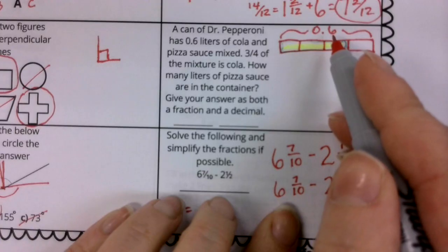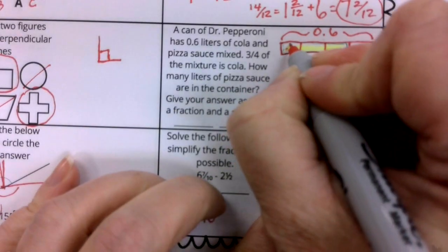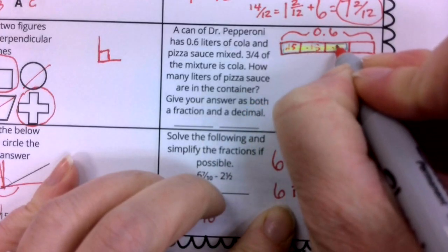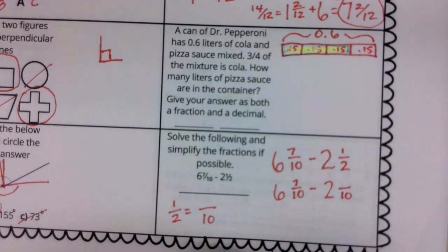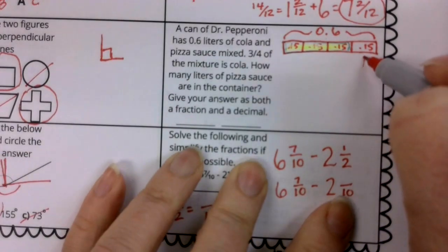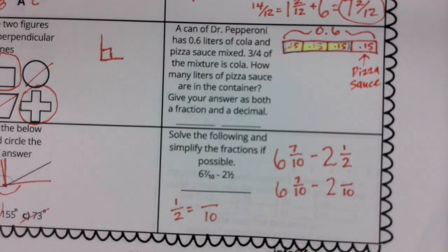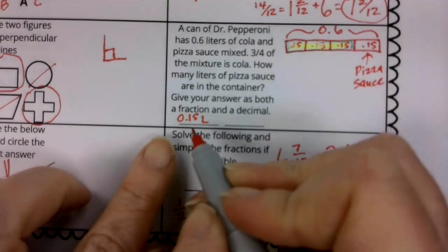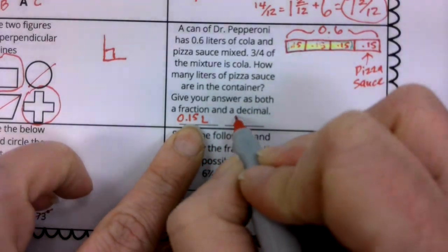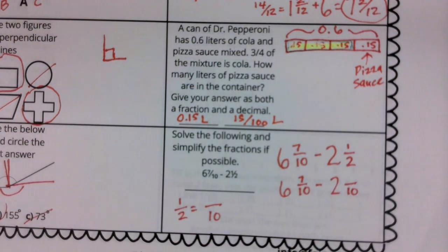So if I think about these 6 tenths as 60 hundredths, I know that if I take 60 and divide it into 4, I'm really going to have 1,500 here, 1,500 here, 1,500 here, and 1,500 here, because if I add 15 plus 15 plus 15 plus 15, I get to 60. 60 hundredths. That helps me see that right here is the pizza sauce. And we have been asked to report this in two ways. So let's report it first as a decimal. We have 1,500, and that is liters. But remember that 15 is in the hundredths place, so we can also report it as 15/100, like that. And again, that report is given in liters. What a very interesting can of Dr. Pepperoni.